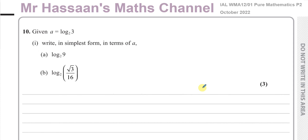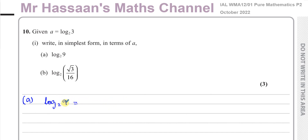Question 10, part 1a says: given a equals log to the base 2 of 3, write in simplest form in terms of a, log to the base 2 of 9. So the first part of this question, we have to take log to the base 2 of 9 and rewrite it so that we'll have something in terms of log to the base 2 of 3, because we have to replace log to the base 2 of 3 with a.